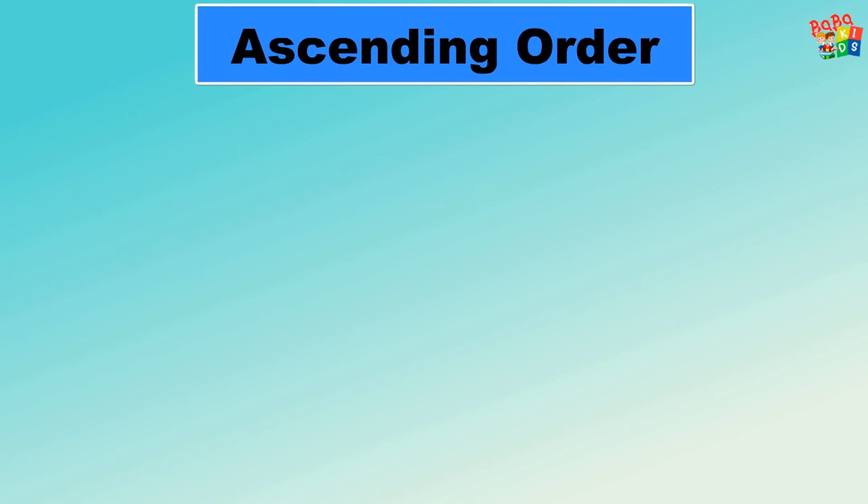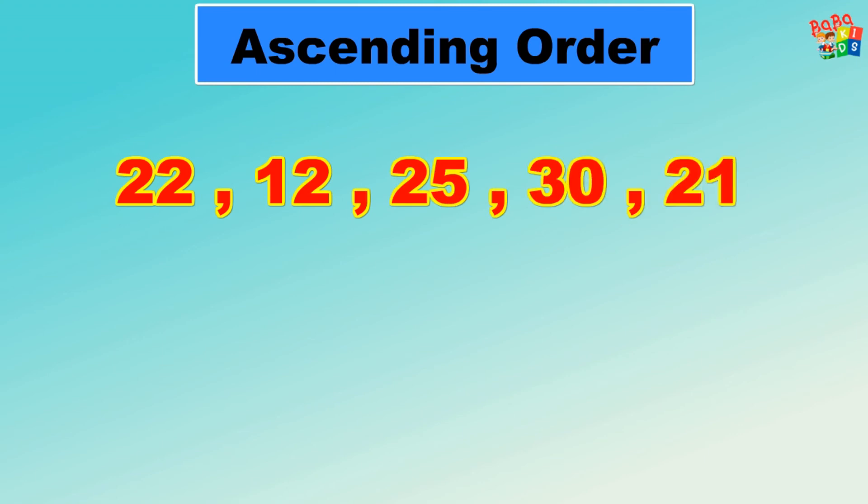Ascending order: 22, 12, 25, 30, and 21. Now look here children. Smallest number is 12, and greatest number is 30.